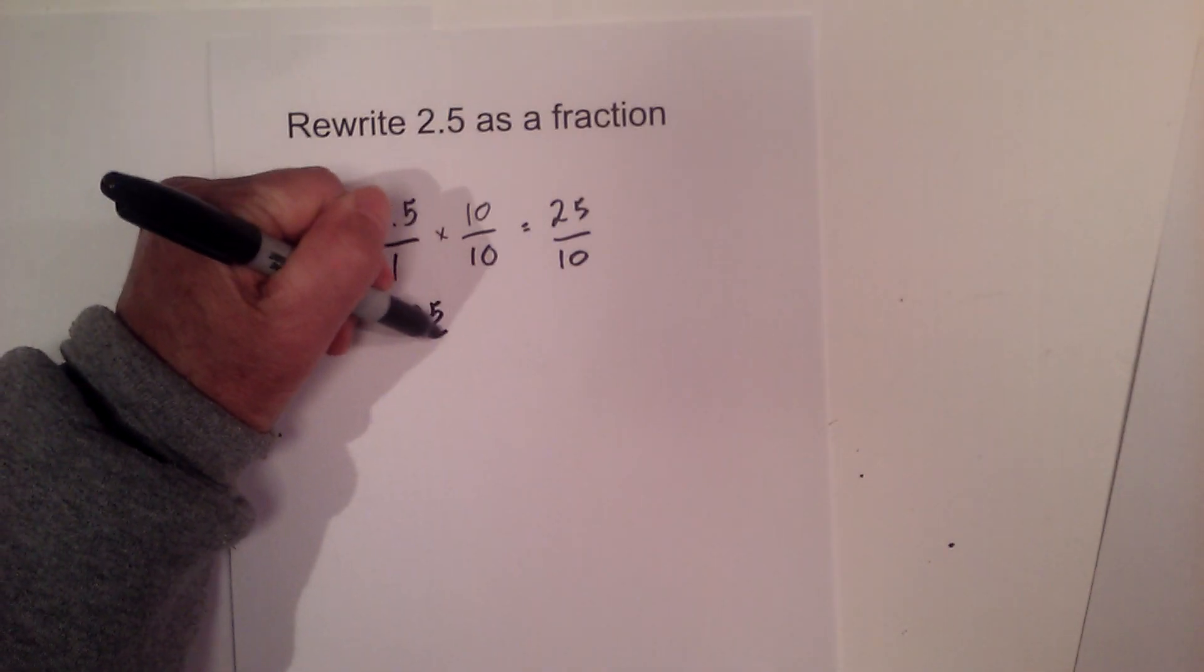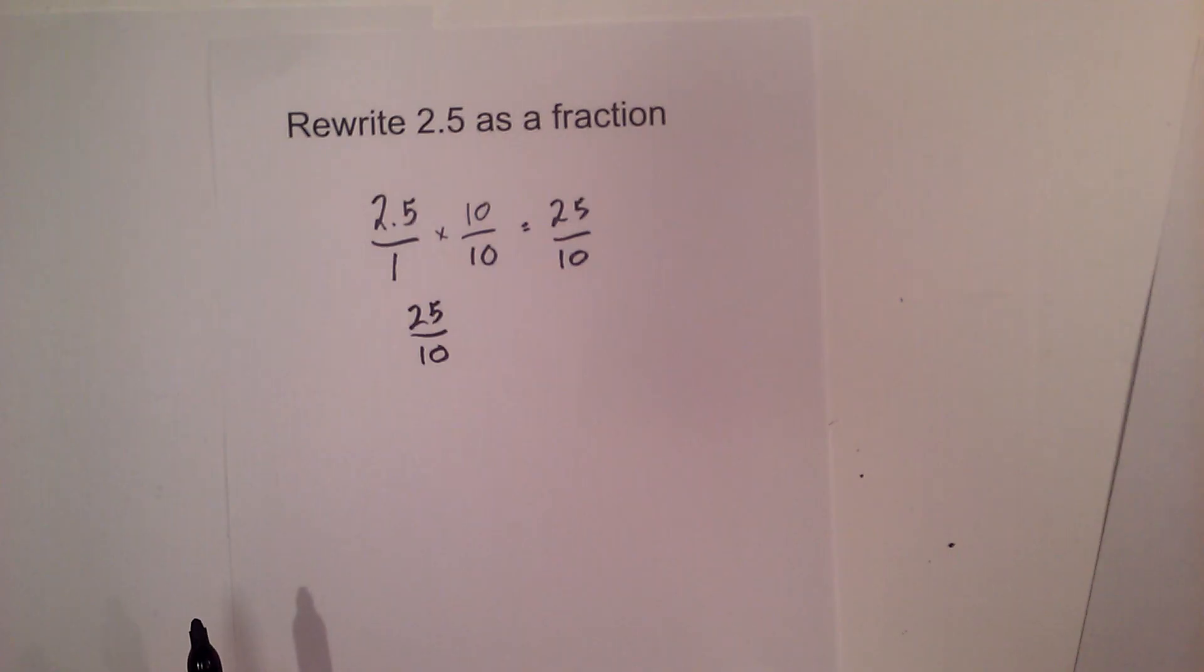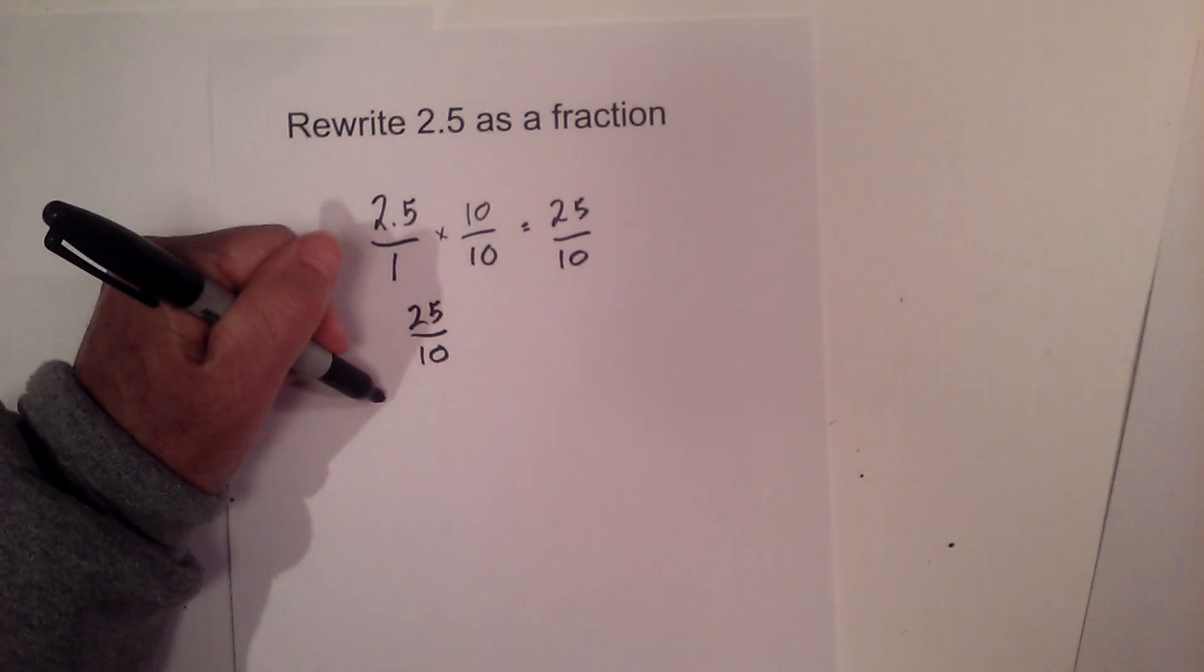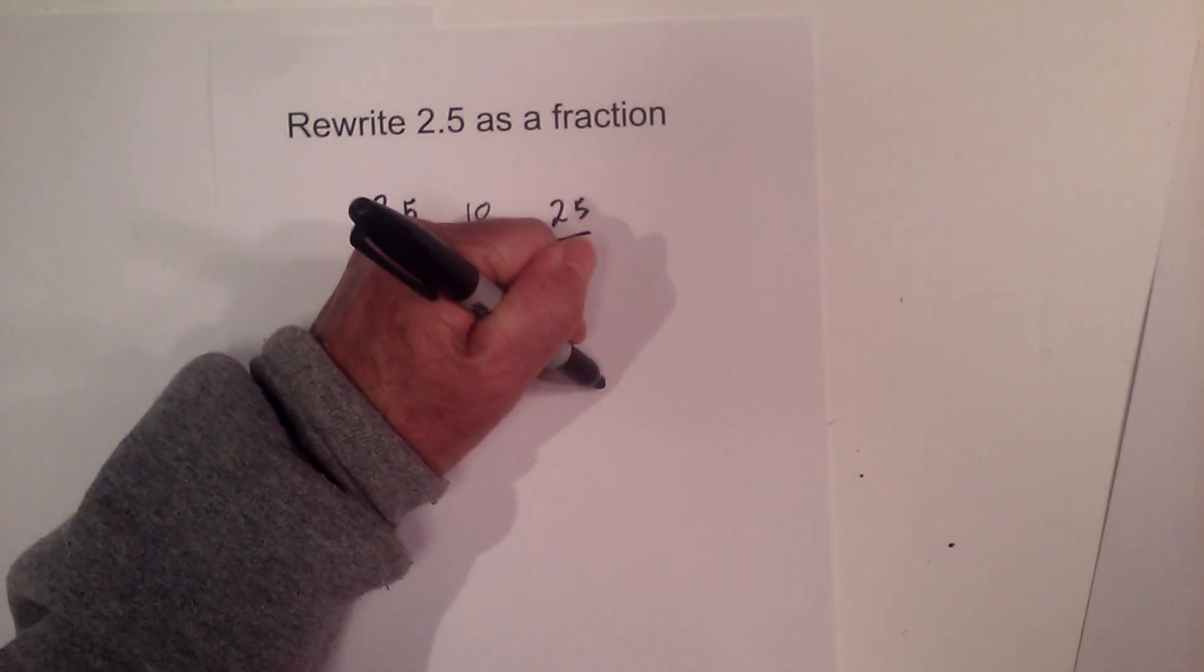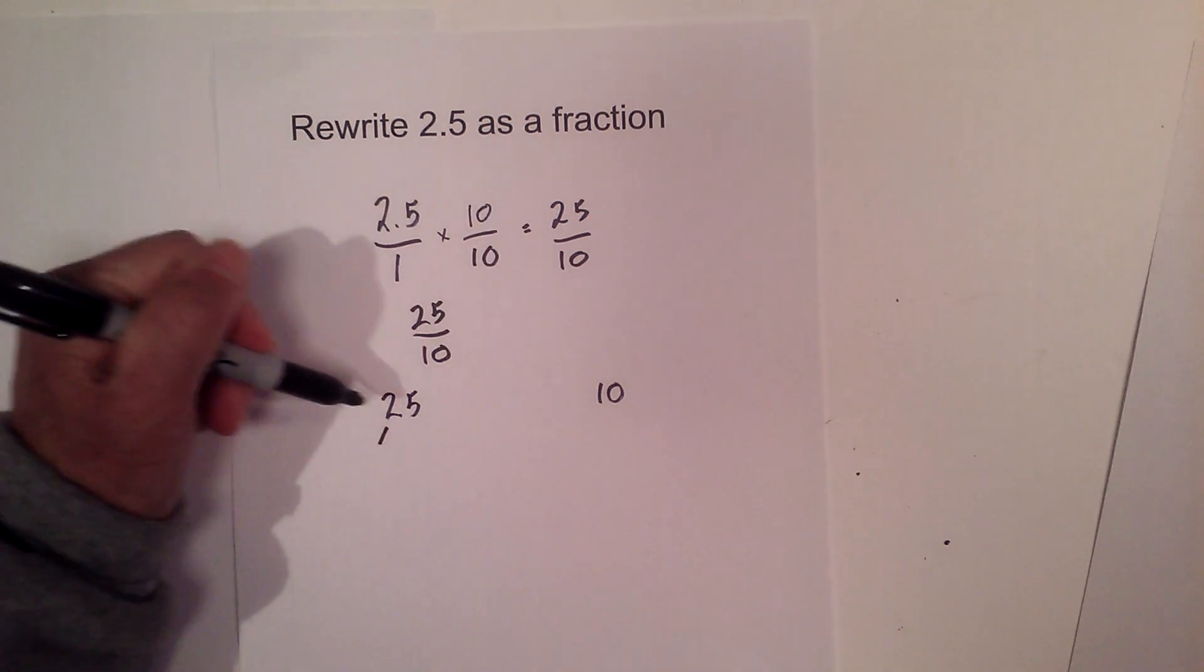So now what I can do is I need to reduce the fraction. I can do this by dividing by a greatest common factor. Let's find the greatest common factor for 25 and 10 and I like to use a factor tree.